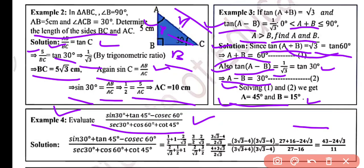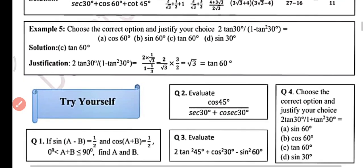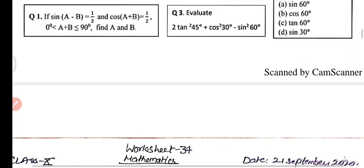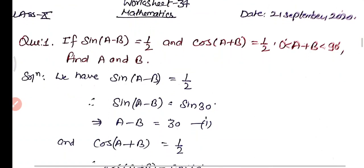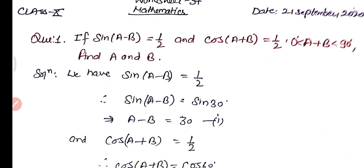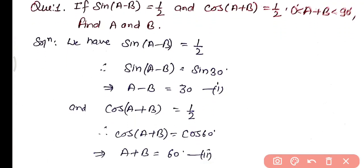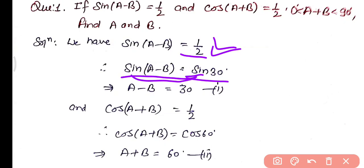Now we have four practice questions. Question 1: If sin(A−B) equals 1 by 2 and cos(A+B) equals 1 by 2, and A+B is greater than 0 and less than 90 degree, find the value of A and B. Since sin(A−B) equals 1 by 2, and sin 30 degree equals 1 by 2, both sides have the same trigonometric ratio so we can compare angles. We get A minus B equals 30 degree — relation 1.